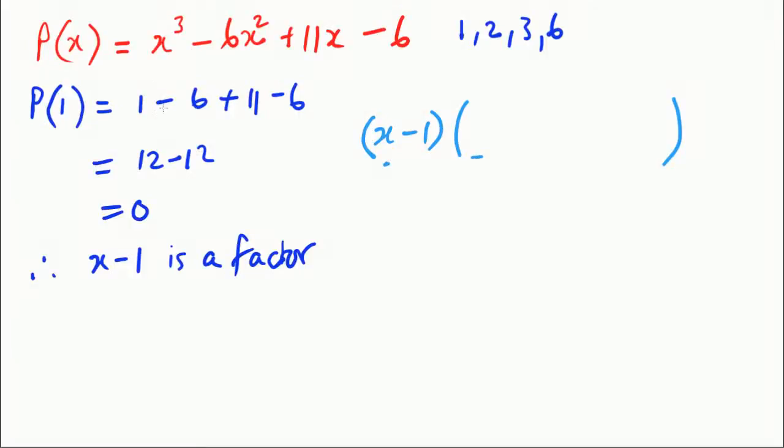All we have to say is this: x times by what here will equal x cubed and the answer to that is x squared. And minus 1 times by what here would give you minus 6 and the answer to that would be plus 6.